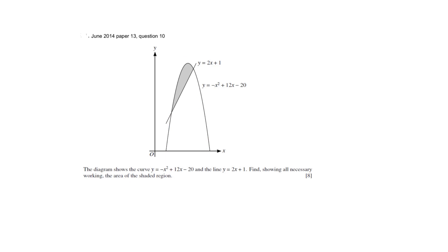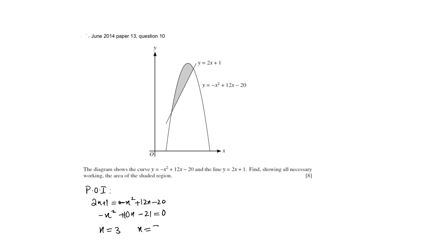A curve is intersecting with a line at two points and you are being asked to find the area of the shaded region. The first thing is to find the points of intersection by solving the two equations simultaneously. When you simplify you get minus x squared plus 10x minus 21 equals 0. Solving this quadratic equation gives two values of x: 3 and 7, which are the lower and upper limits.